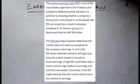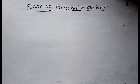A high PE ratio could mean that the stock price is high relative to earnings — this is considered overvalued. A low PE might indicate that the current stock price is low relative to the earnings.